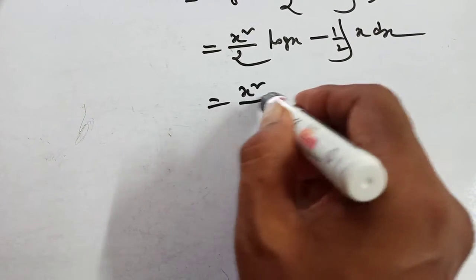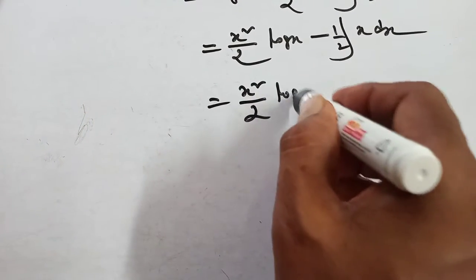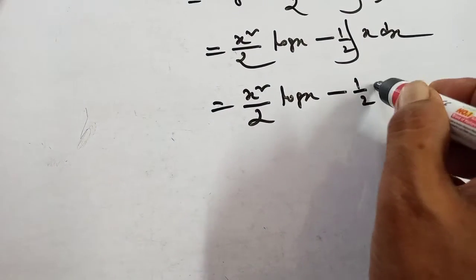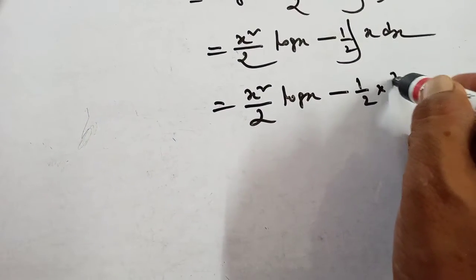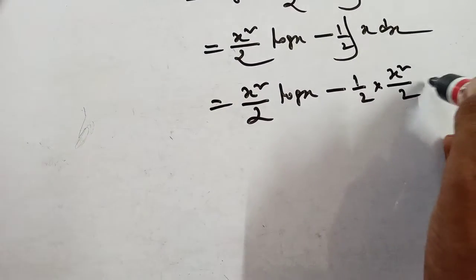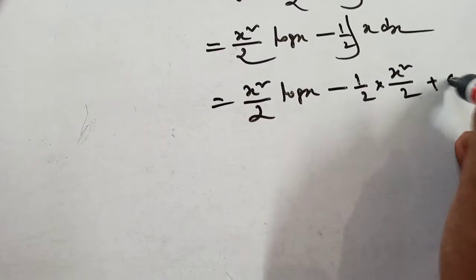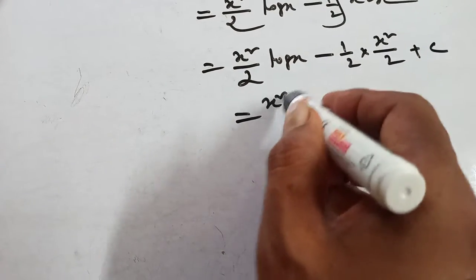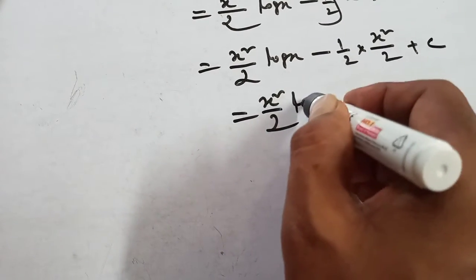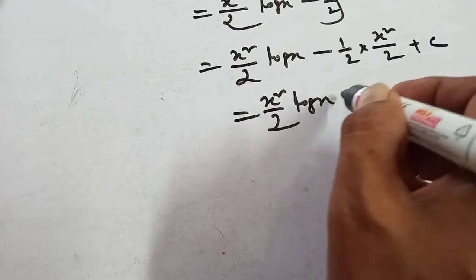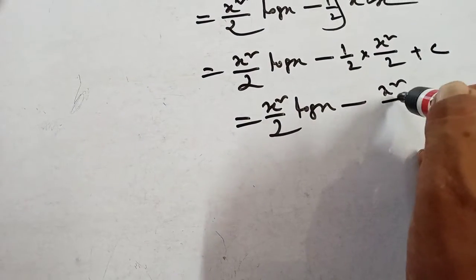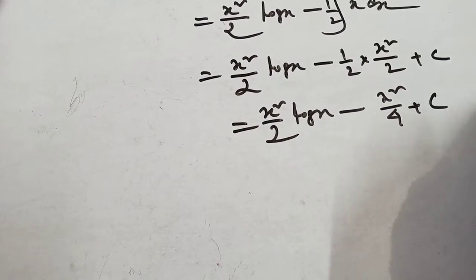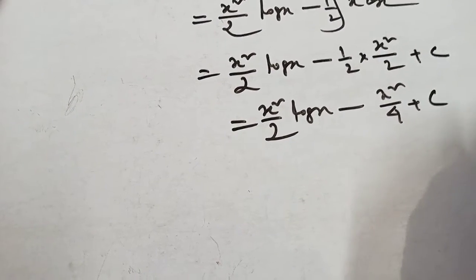x squared into log x minus 1 by 2, integration x squared by 2, plus C. That means x squared by 2 into log x, minus x squared by 4, plus C. This is the answer.